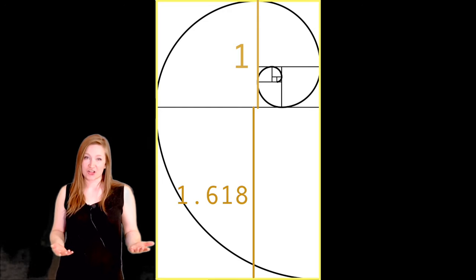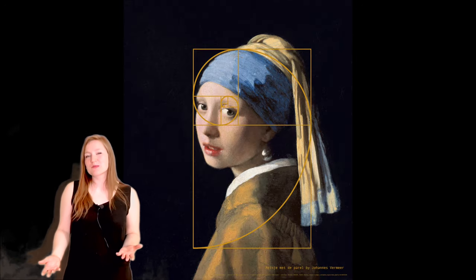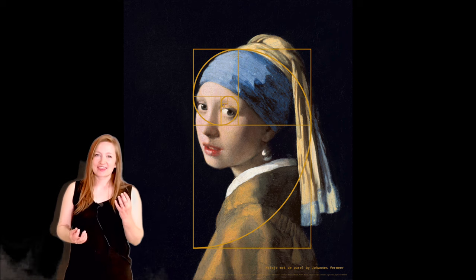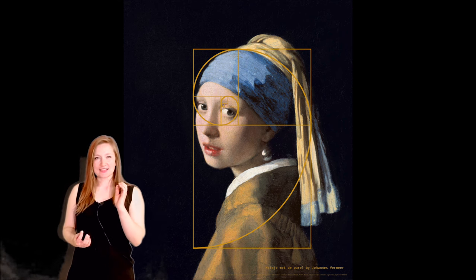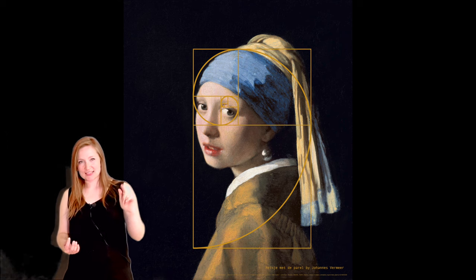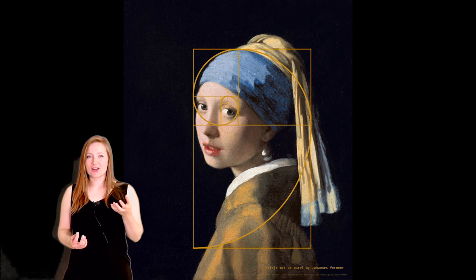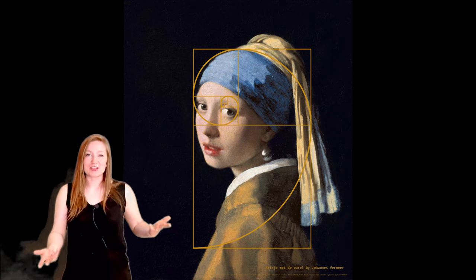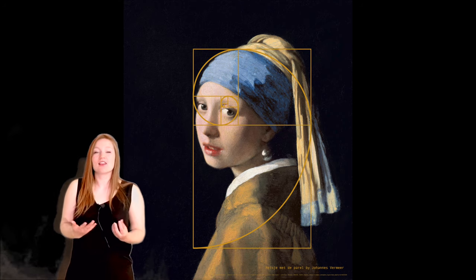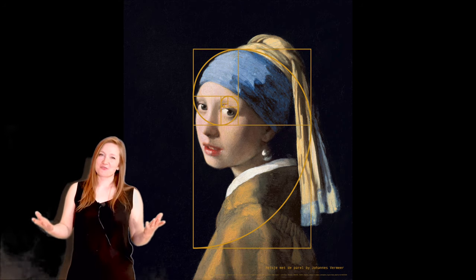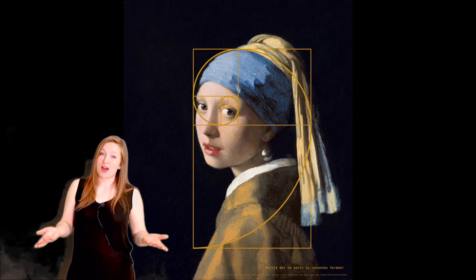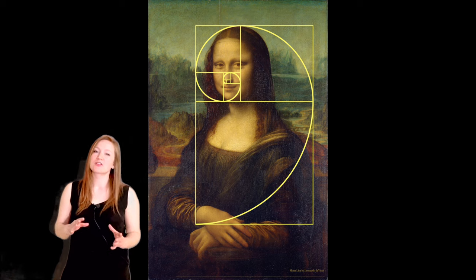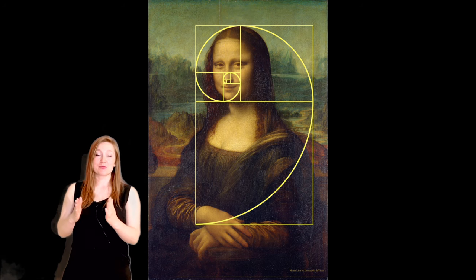The spiral shows up in famous pieces of art — for example, Vermeer's painting of the Lady with the Pearl Earring. The end of the spiral lands in her gaze, and the spiral also leads into her eyes. It's a very powerful painting that we know and love. This golden spiral may explain why — and if we look at the Mona Lisa, the golden spiral also gets into the pupils of her eyes.